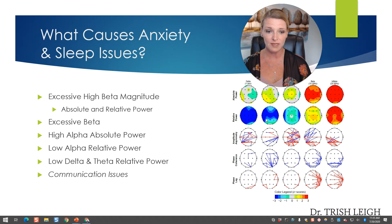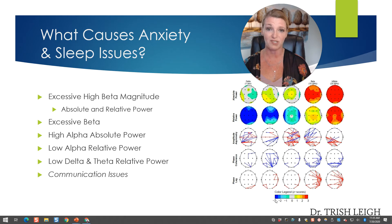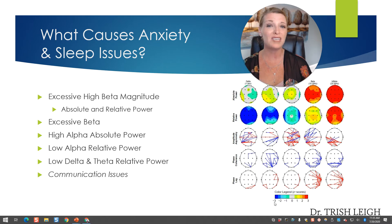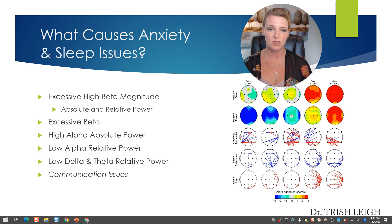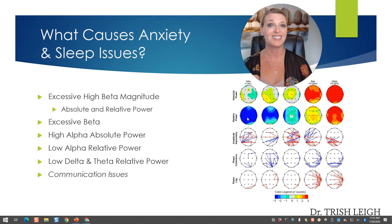On this brain map, you can see on the color legend that these blue colors are in the minus. When we see dark blue, it is minus three levels of sleep mode working at night. Basically, what this means is your brain is not able to shift into sleep, nor is it able to stay asleep to move through the sleep cycle.